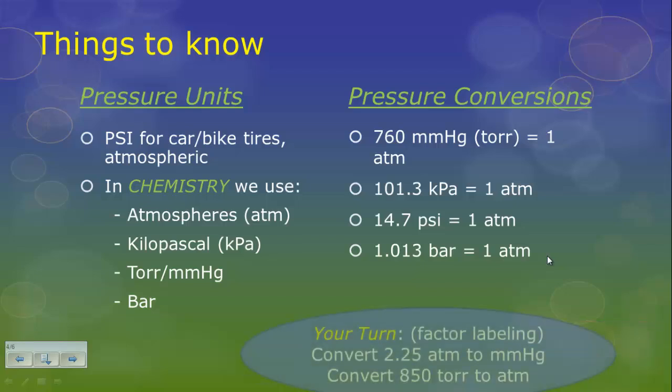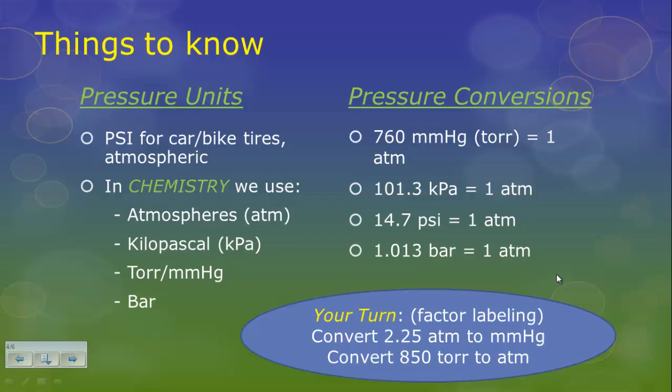So right now, before you continue on, I would like you to convert between 2.25 atms to millimeters of mercury and also convert 850 torr to atm. Use factor labeling and canceling out of units. Please show your work and you'll bring this to class tomorrow. So hit pause and do that now.